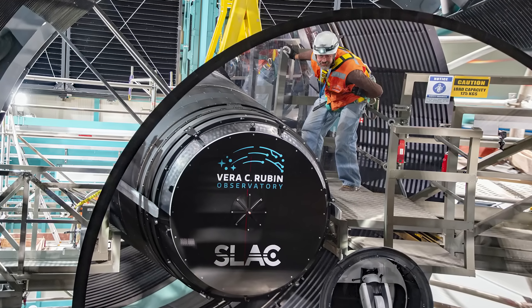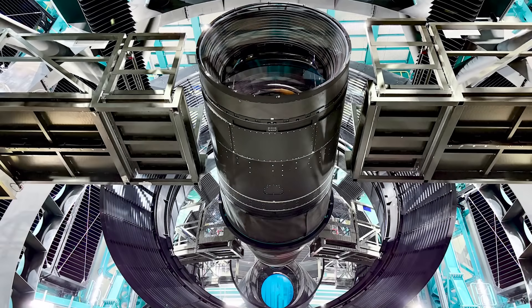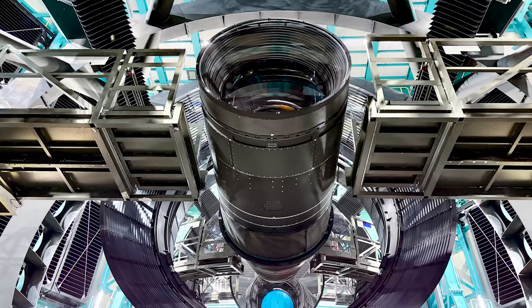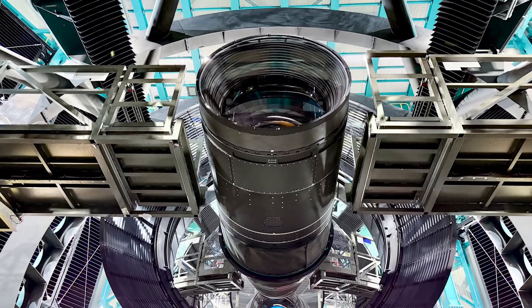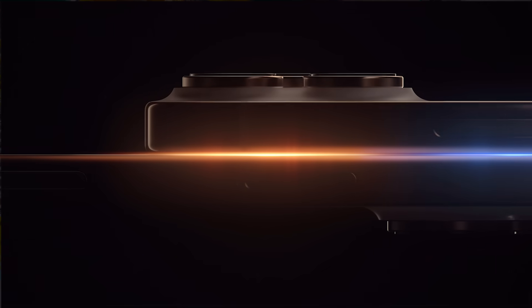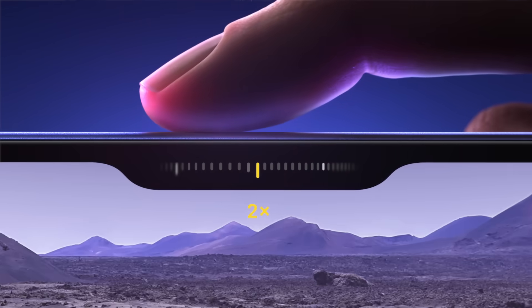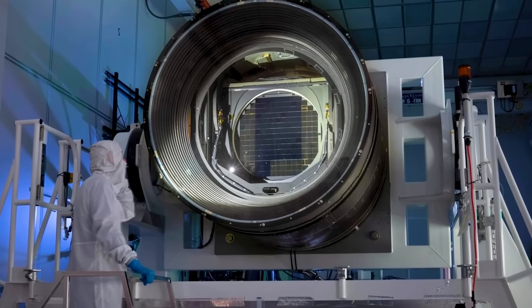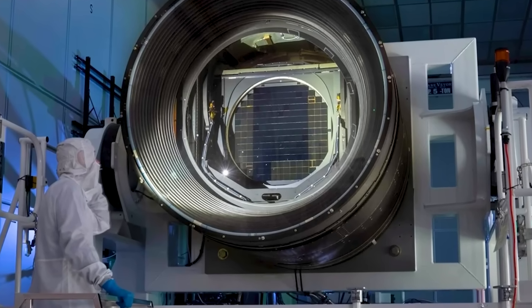At Rubin's core is a groundbreaking piece of technology, the largest digital camera ever built. It's the size of an SUV and weighs about the same. While the latest iPhone has a 48-megapixel image sensor, Rubin packs 3200 megapixels, more than 66 times the resolution.